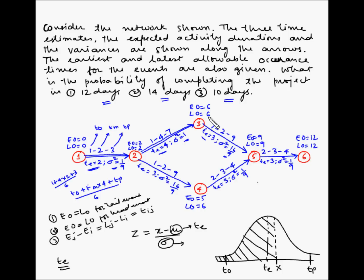For activity 3-5: tail event EO = LO = 6, met. Head event EO = LO = 9, met. EJ minus EI = 9 minus 6 = 3 = Te, so all conditions are met — activity 3-5 is critical. For activity 5-6: tail event EO = LO, head event EO = LO, and EJ minus EI = 12 minus 9 = 3 = LJ minus LI = 3 = Te = 3. All conditions met, so activity 5-6 is also a critical activity.